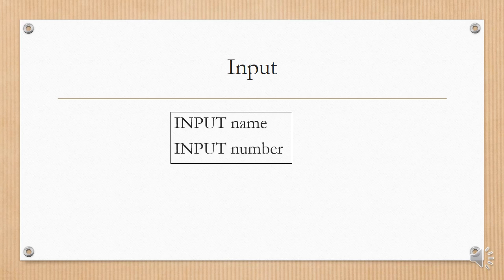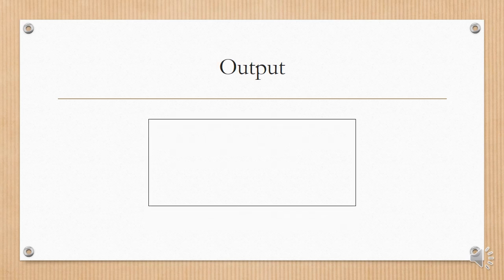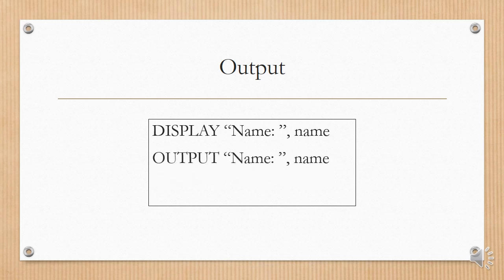For input, you just use the word input — for example, input number — and that refers to when you use JOptionPane.showInputDialog in your Java program. For output, you can use the word display, and if you want some hard-coded data you would put, for example, "Name:" in quotes, comma, name as a variable. Or you can say output, or you can say print — it really doesn't matter. Algorithms are not like Java programming, which is very strictly defined; as long as you have the idea that you want to put something on the screen, you can use display, output, or print.